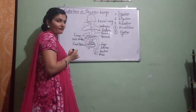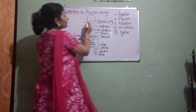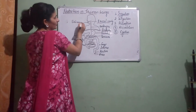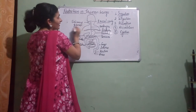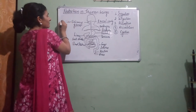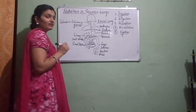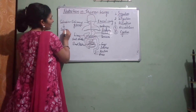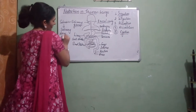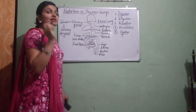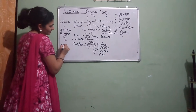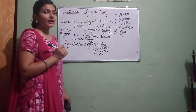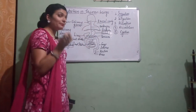Then the food goes to the buccal cavity. In the buccal cavity, there are salivary glands present. Salivary glands secrete saliva, and saliva has an enzyme called salivary amylase. Salivary amylase helps in the digestion of carbohydrates. So we can say the digestion of carbohydrates starts in the buccal cavity.